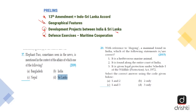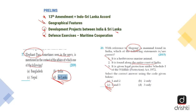A previous question on Dugong asked which statements are correct. If you've listened to this editorial, you know it is a herbivorous marine animal and it is given legal protection under Schedule 1 of the Wildlife Protection Act of 1972. It is not found along the entire coast of India — it is found especially in the Gulf of Manar. So the answer would be statements 1 and 3.